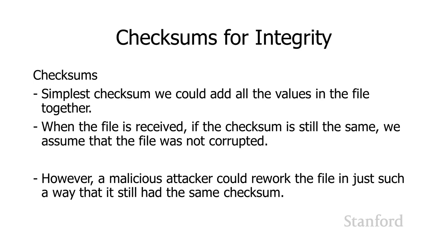It's possible for a file to get corrupted in just such a way that the checksum is still the same — that is a possibility, but it's unlikely. You may have run into checksums when downloading zip files where it says there's a checksum error — that means the checksum was calculated when the zip file was generated, and now when unzipping it, the checksums don't match. Something went wrong — either bits got altered in internet transit, or the file got corrupted on one end or the other. That's probably the most likely place you'll encounter a checksum.